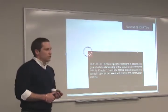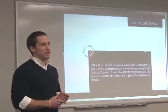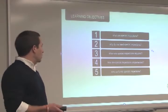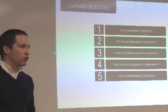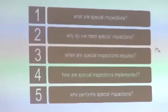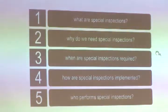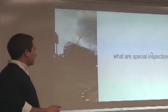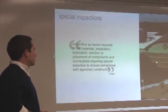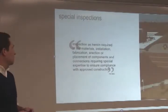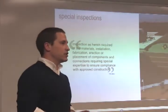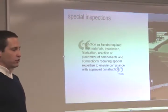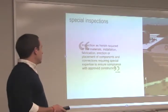So, special inspections. This course is designed to give a better understanding of what special inspections is, how we get there, and why it started. We'll answer questions like: what are special inspections, why we need them, when are they required, how you actually get to all the different components of the special inspections plan, how are they implemented, and who actually does the special inspections review. Special inspections, as defined by the code, is a review of materials, installation, and the process of construction — in general, a review of all construction by an expert who is trained and educated in the actual process.